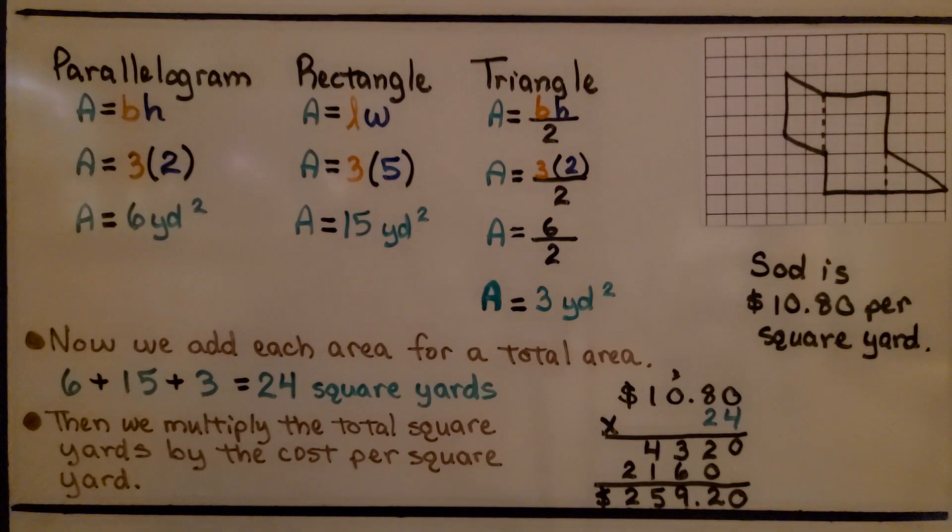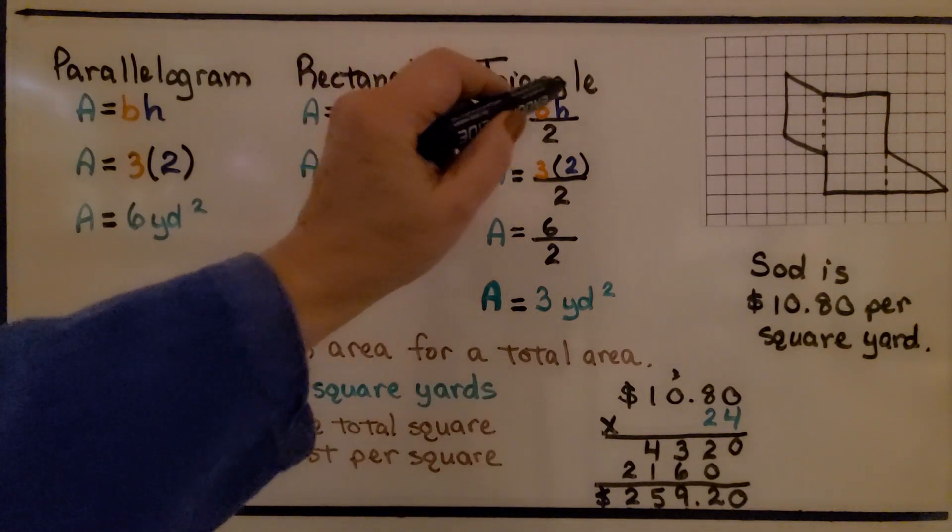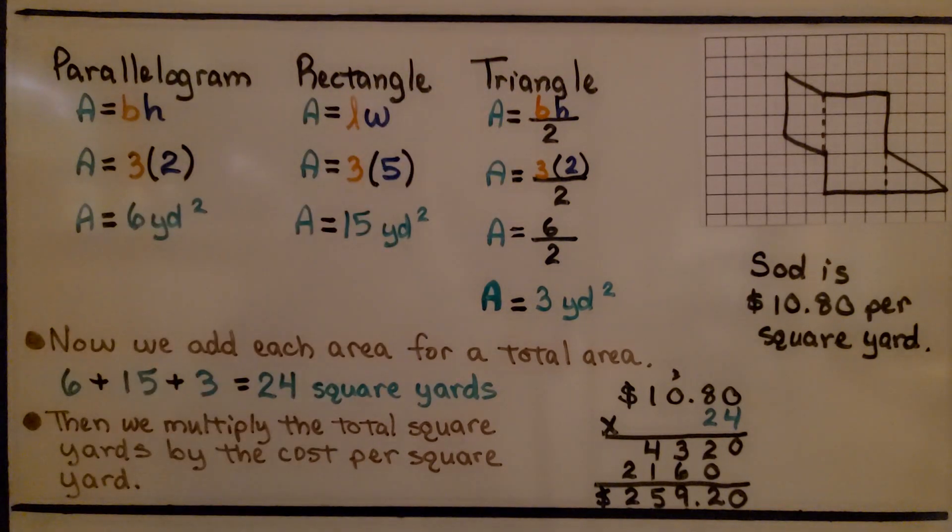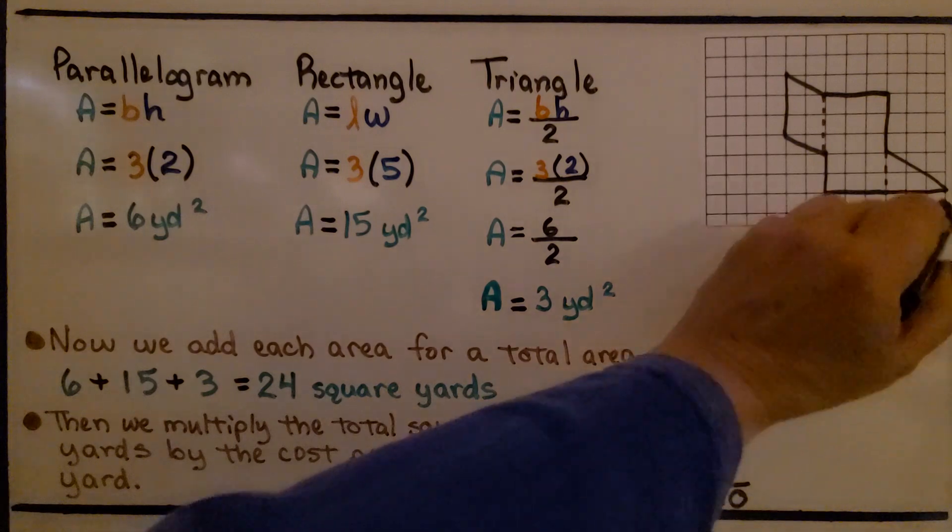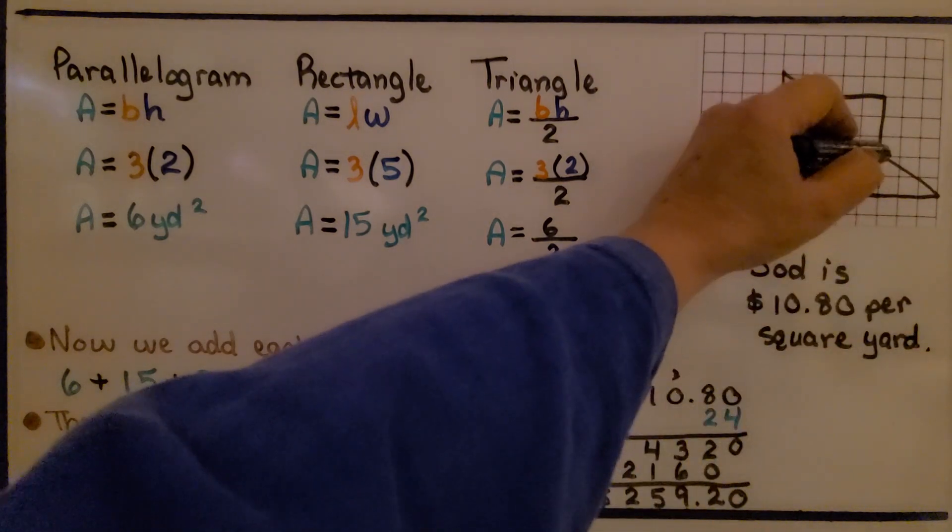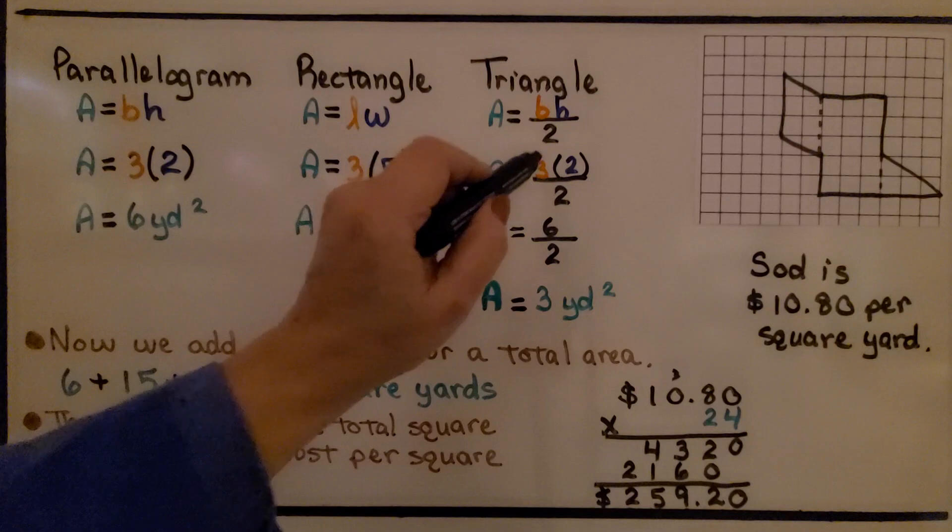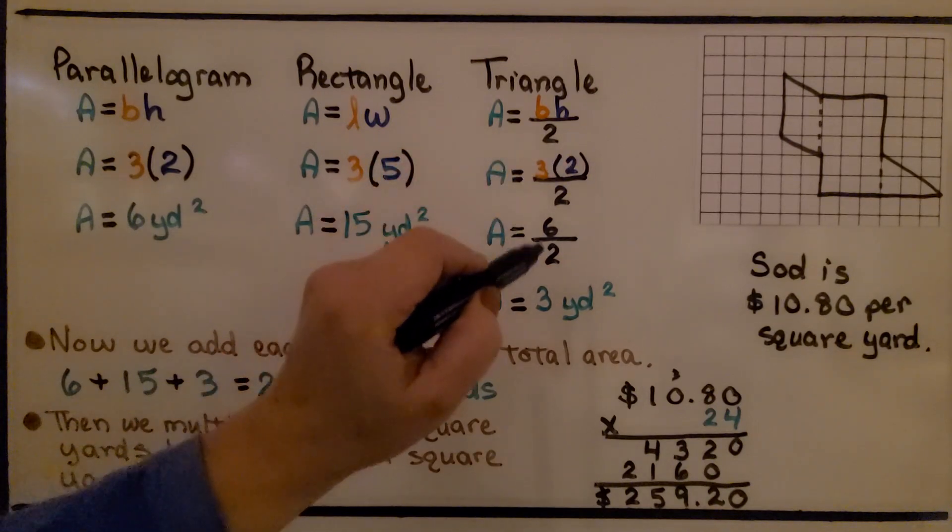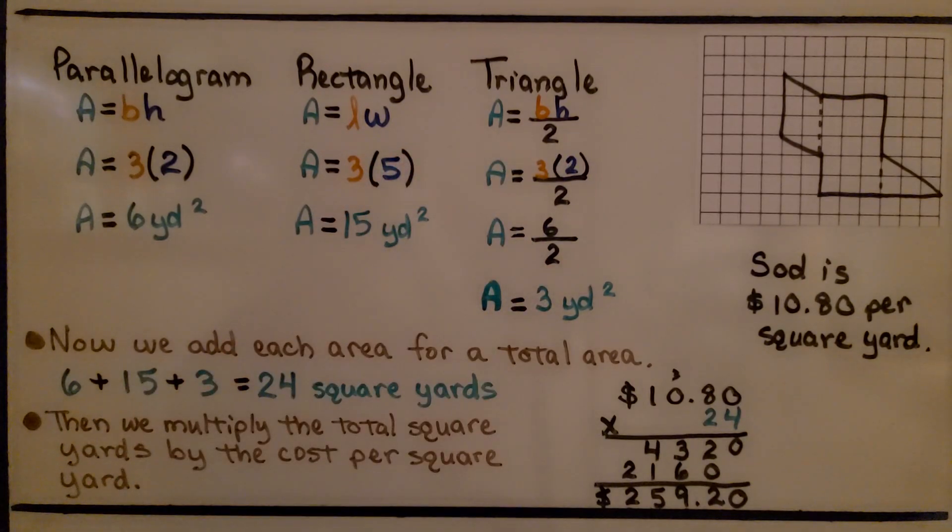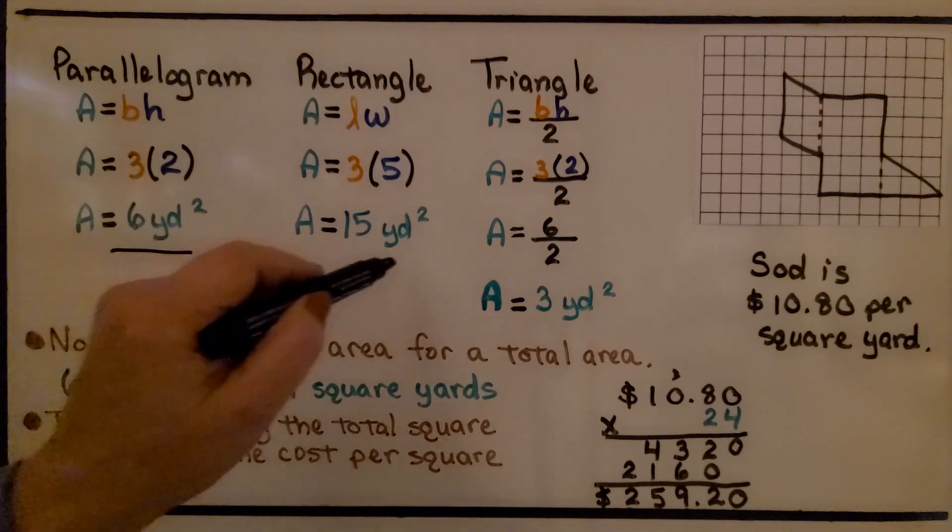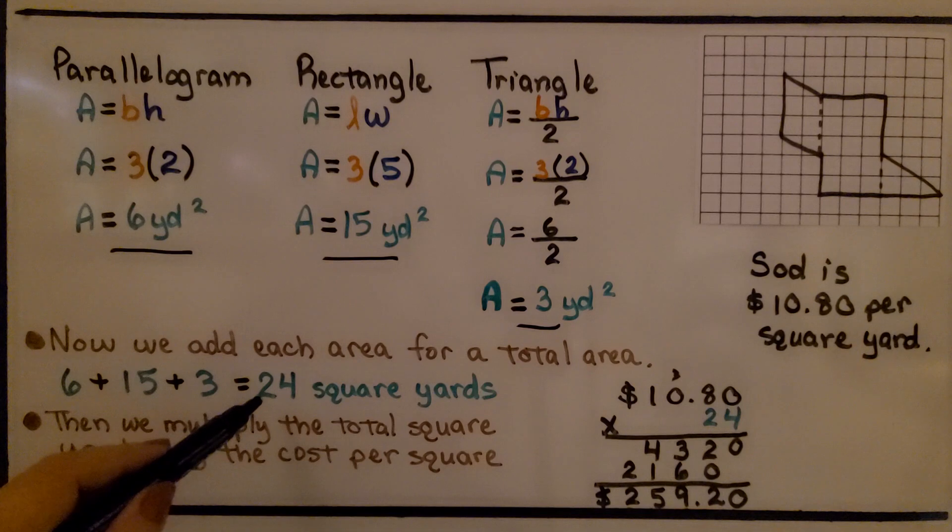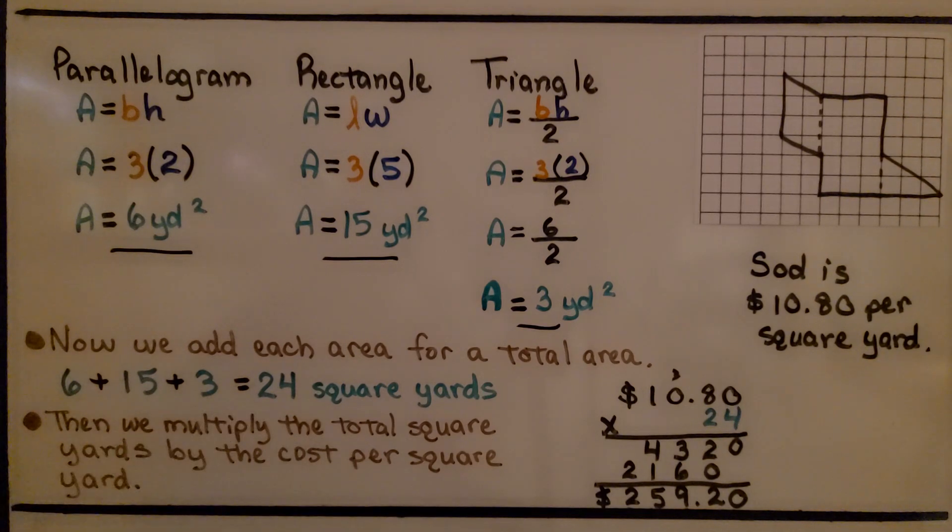For the triangle, we can use the base times the height divided by 2, or half times the base times the height. Same thing. Our base is 1, 2, 3, and our height is 1, 2. We do 3 times 2, which is 6, divided by 2. That gives us 3 yards square for that area. Now we add each area for a total area. We've got 6, 15, and 3. That gives us 24 square yards.